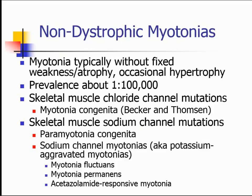Non-dystrophic myotonias are myotonias without fixed weakness or muscle atrophy. In fact, sometimes these patients actually have hypertrophied muscles because their muscles are working extra hard. This is much less common than myotonic dystrophy — prevalence about 1 in 100,000 — though I think it goes underdiagnosed, especially in the adult population. It can be subdivided into those affecting skeletal muscle chloride channels — that's myotonia congenita, the Becker form (recessive) and the Thompson form (dominant) — or those affecting the skeletal muscle sodium channel.